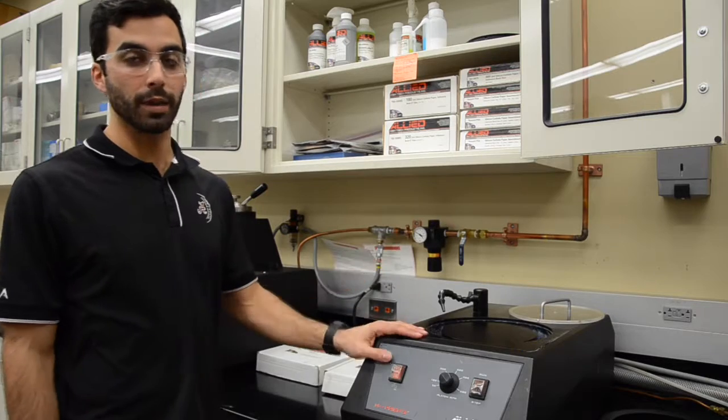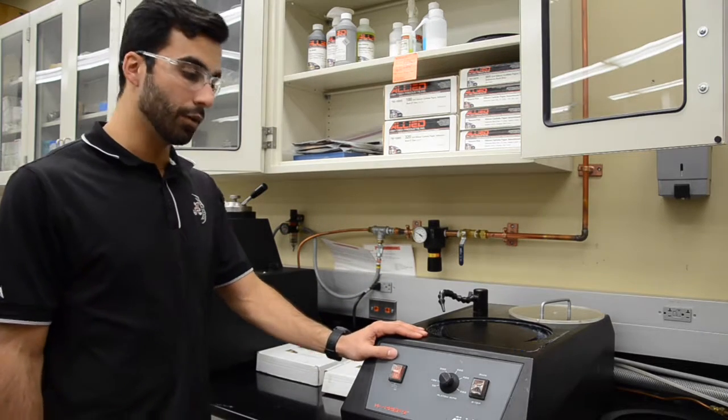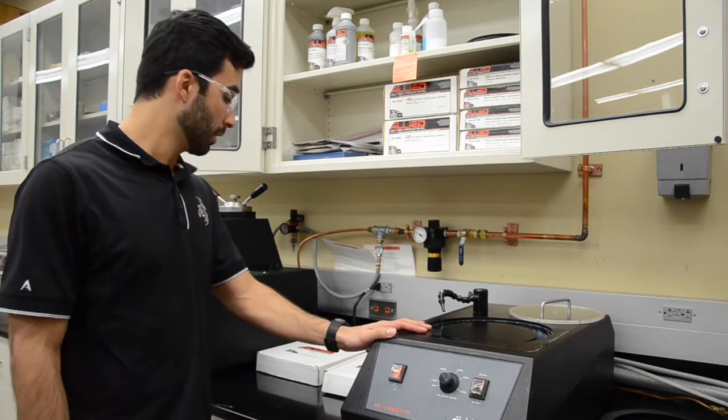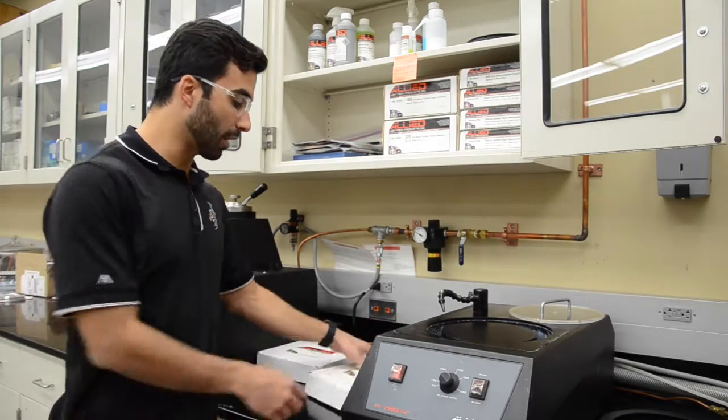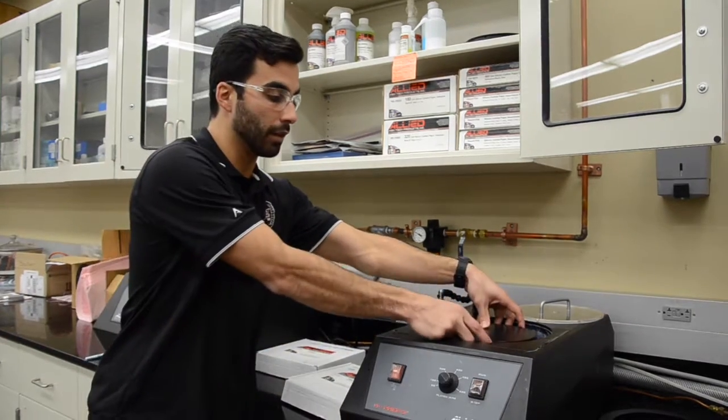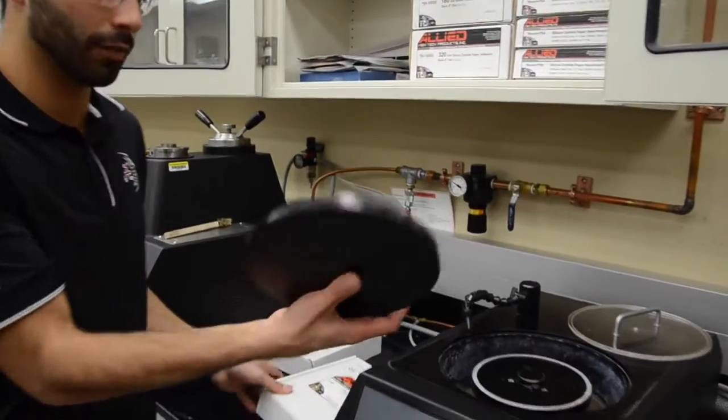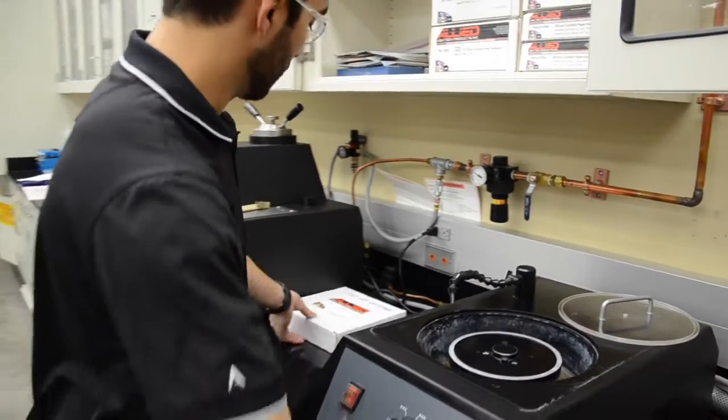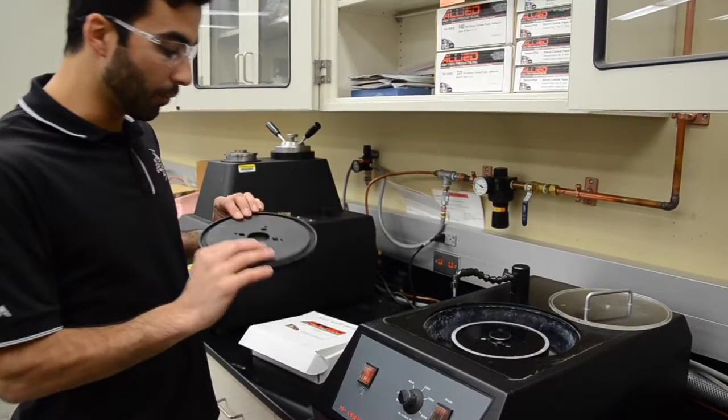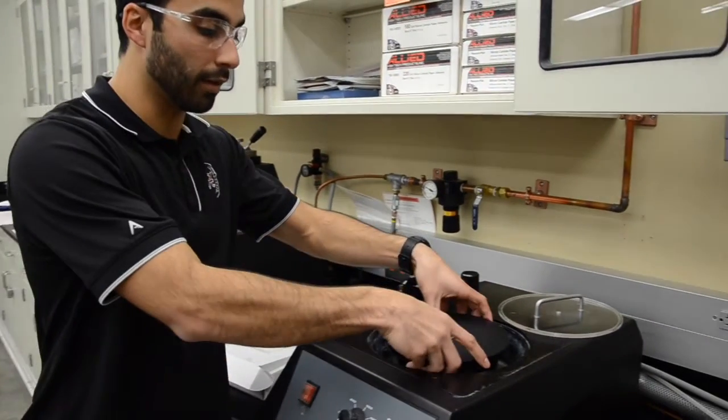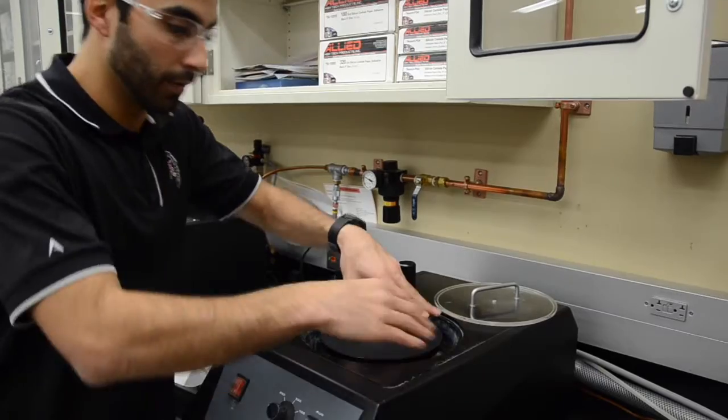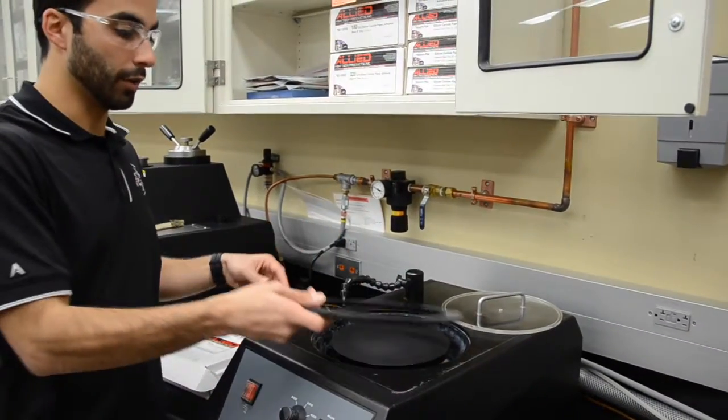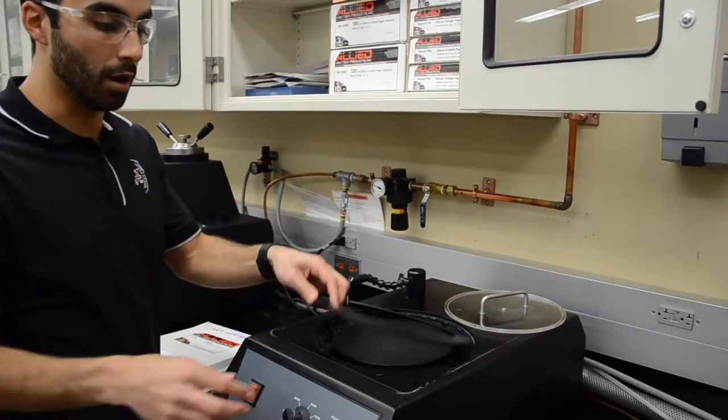Once you finish all the way your steps down to the 1200 grit, you're going to move to polishing. For polishing, we're going to swap the platens. We're going to take the one with sandpapers out of here, clean it and then store it. And then we're going to use the one that is not to be used with sandpapers and place it here the same way. The string comes in and out.